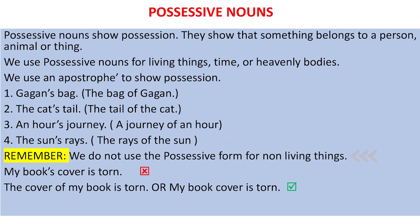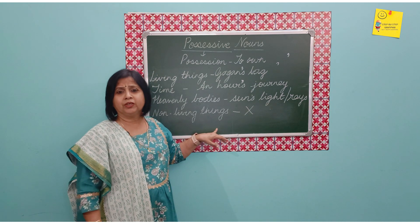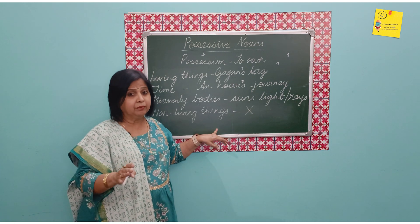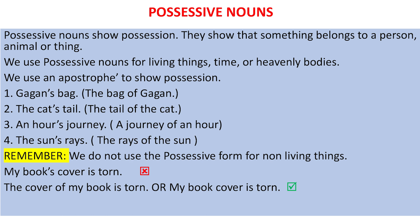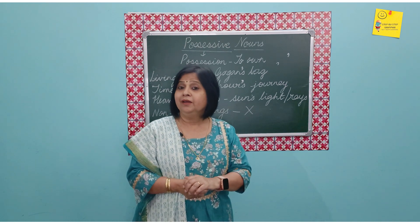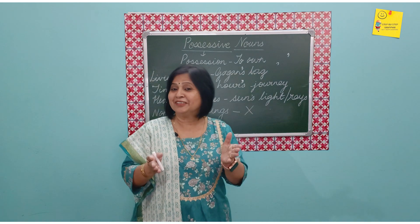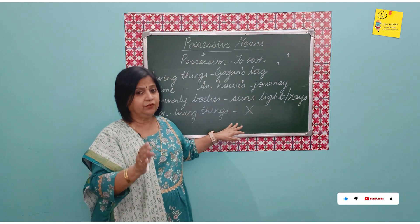You need to remember that we generally do not use the possessive form for non-living things. In some books or some cases you might see it used, but generally it is not recommended. For example, instead of saying my book's cover, say the cover of my book, or simply my book cover. Similarly, you cannot say the chair's handle because a chair is a non-living thing. Try to avoid possessives for non-living things.